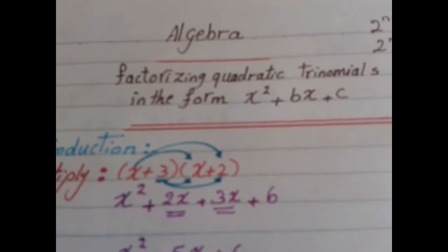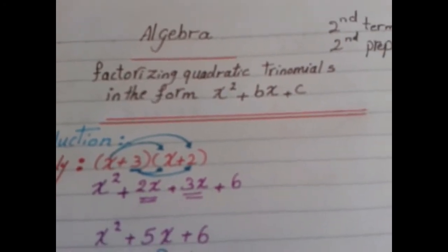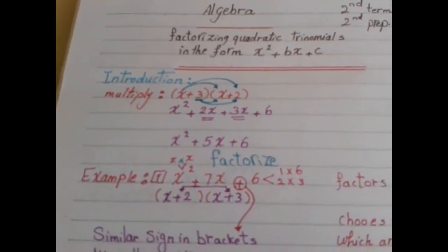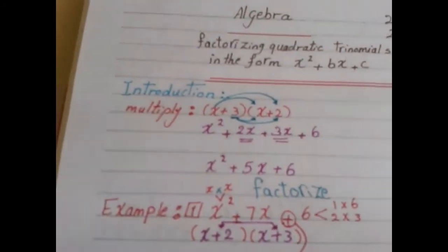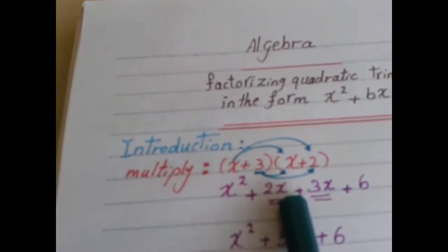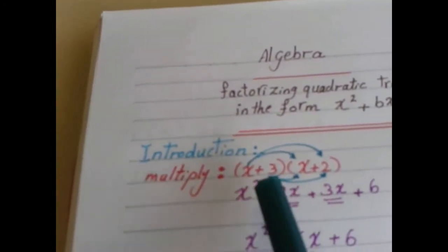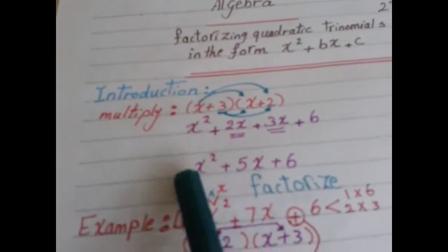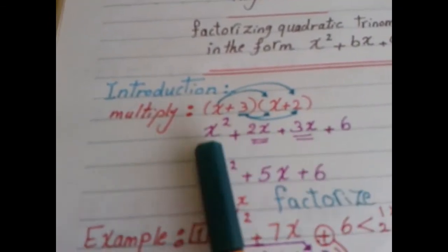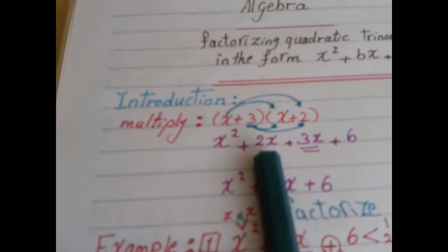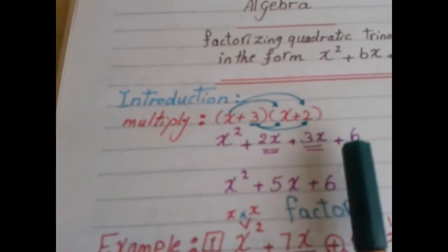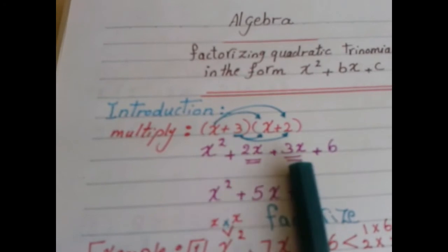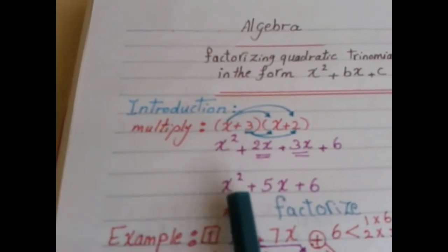To express the meaning of factorize, I need to show how to multiply two brackets like (x + 3) and (x + 2). We start with x by x, then x by 2, then 3 times x, and 3 by 2. This gives x squared, plus 2x, plus 3x, plus 6. Collecting like terms: x squared plus 5x plus 6.